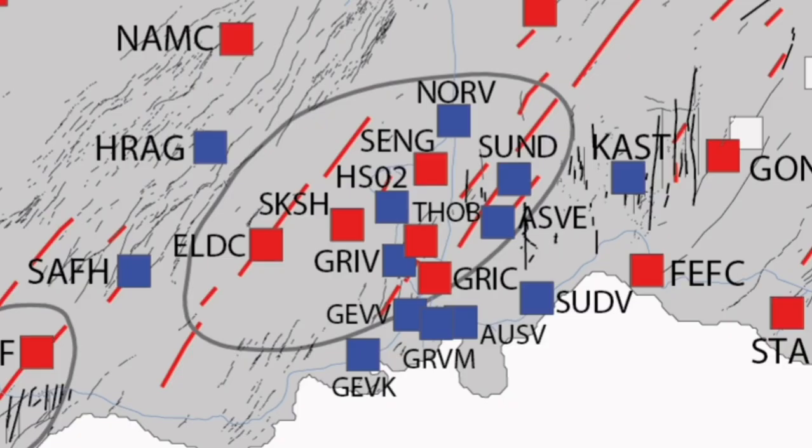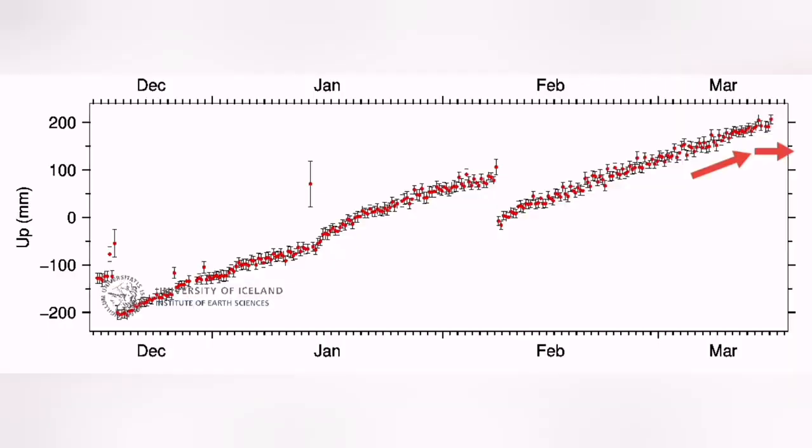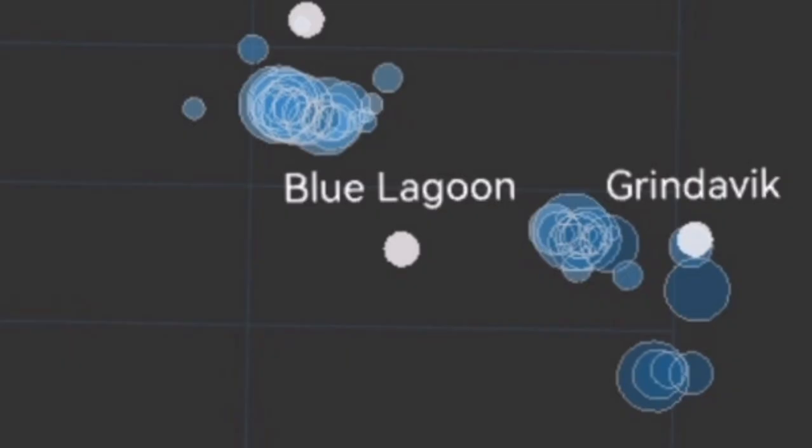The Svinafellsjökull volcanic system has erupted three times already. We are seeing the sourcing itself, the land uplift has been reduced slightly, then again a little bit rising. But most of the trend was that it didn't rise as fast as it would be doing previously, so we show it by the minus sign.